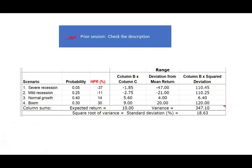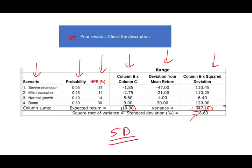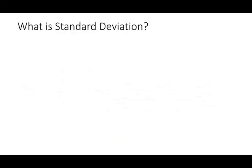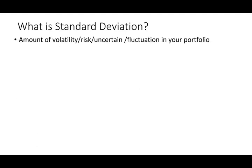In the prior session we looked at a scenario analysis with four scenarios — the probability for each scenario, the holding period return, the expected return of the portfolio, the deviation or range from the expected return. We computed the variance, and from the variance we square-rooted it to get the standard deviation. The focus of this session is how the standard deviation fits into a normal distribution. A standard deviation is the amount of volatility, risk, uncertainty, and fluctuation in your portfolio.